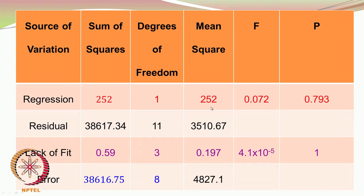We calculate the mean square by dividing sum of squares by degrees of freedom to get regression, residual, lack of fit, and pure error mean squares, along with corresponding F values. The p values are pretty high, which means that the parameter β₁ is pretty much insignificant — x₁ is actually contributing little to the model.